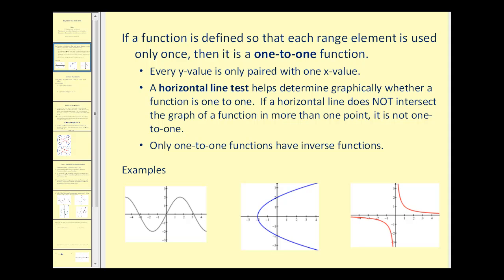We're going to start off by talking about a special type of function: a one-to-one function. If a function is defined so that each range element, or y value, is used only once, then it is a one-to-one function. If every y value is only paired with one x value, we have a one-to-one function.